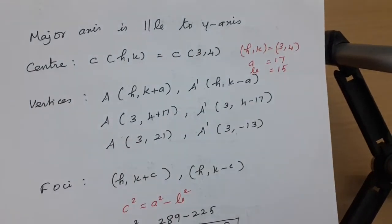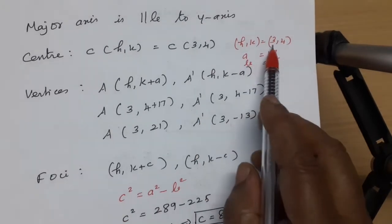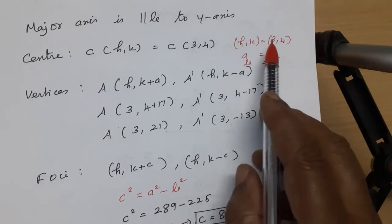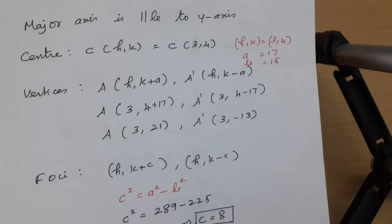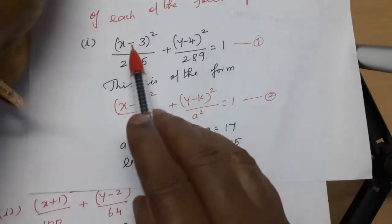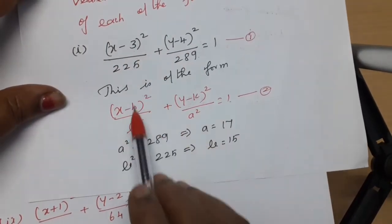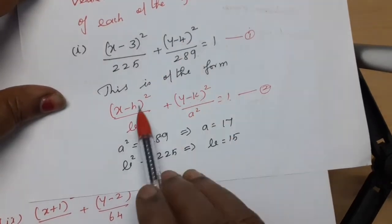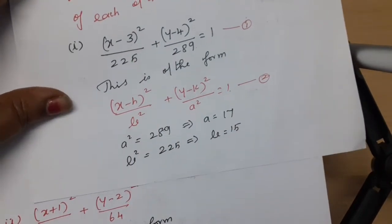The center is h comma k. Comparing x minus 3 and y minus 4 with x minus h and y minus k, we get h equals 3 and k equals 4. Therefore the center is (3, 4).